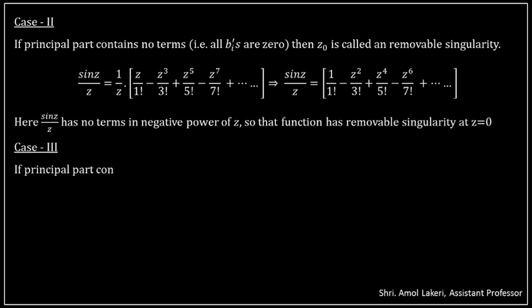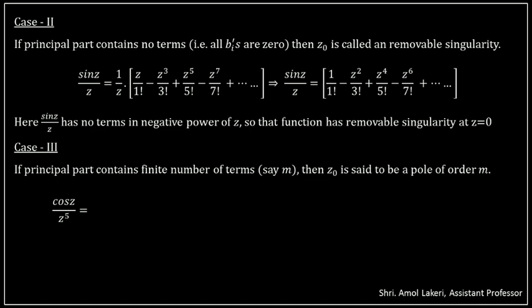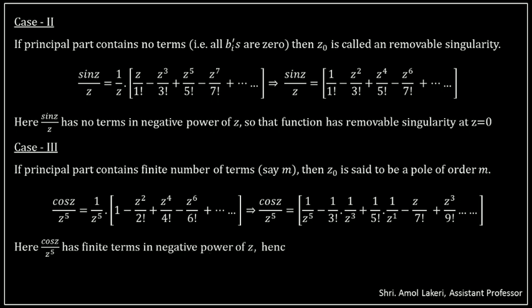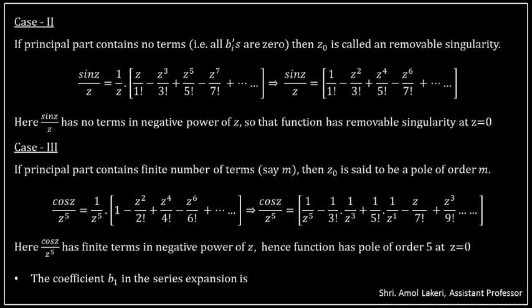Case 3: if the principal part contains finite terms, i.e., the maximum negative power of Z is M, then Z0 is said to be a pole of order M. For example, in the expansion of cos Z divided by Z to the power 5, the maximum negative power of Z is 5, and it contains finite terms in negative powers of Z. Hence, the function has a pole of order 5 at Z equals 0. The coefficient B1 in the series expansion is called the residue of f of Z at Z0, which we shall discuss later. That's all from this session. In the next session, we shall discuss some examples on Laurent series expansion.